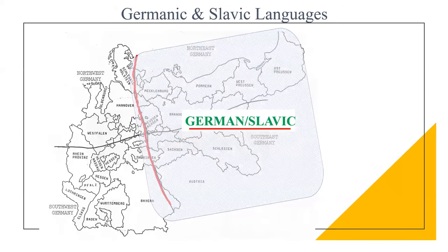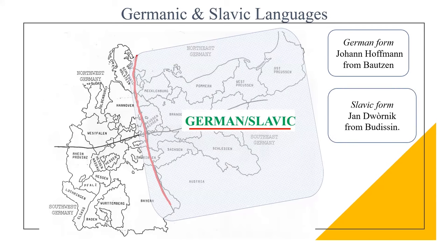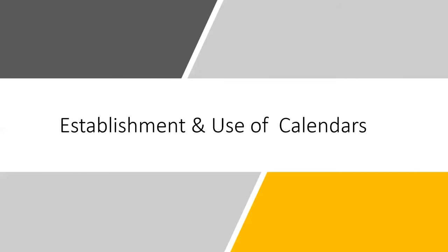In this German-Slavic area, church records could record entries in either the German or the Slavic language. For example, a person could be identified in German as Johan Hofmann from Bautzen, or in the Slavic language as Jan Dvorinik from Budeson. The Julian calendar was established at the time of Julius Caesar in 46 B.C. It was not used in the Germanic and Slavic areas until after the establishment of Christianity. Catholics used the Julian calendar up until 1582, and the Protestants used it up until 1700.